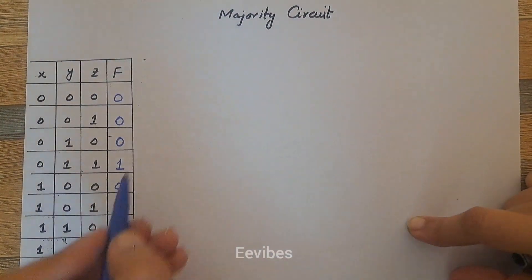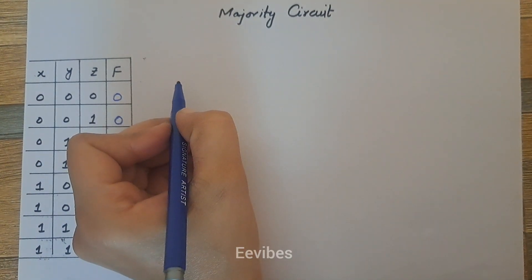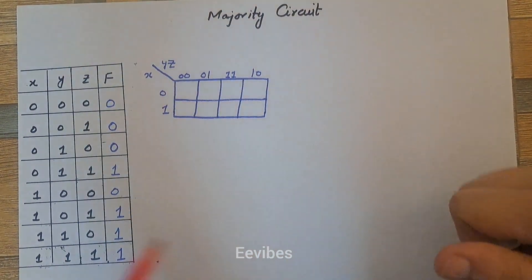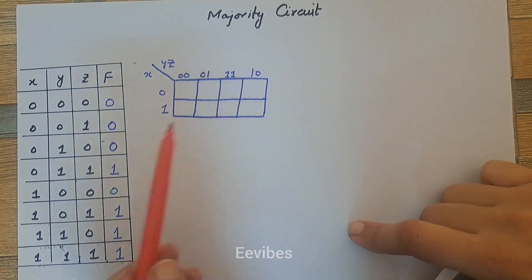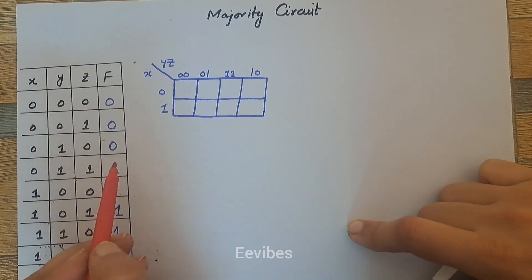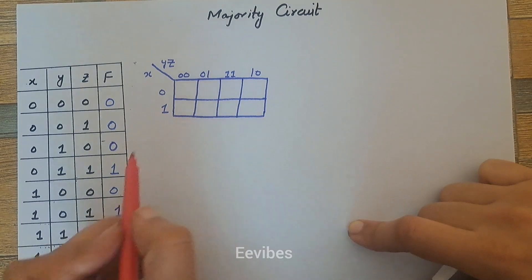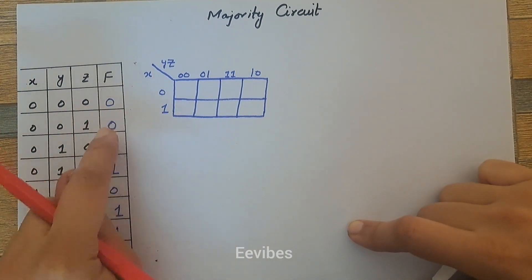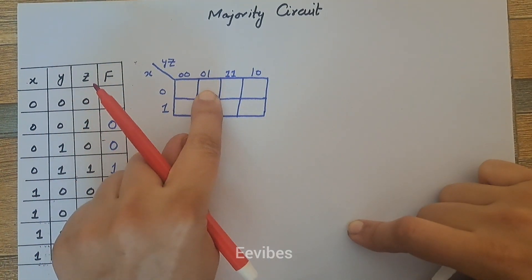The next step is to construct the K-map for this problem. So here you will design a three-variable K-map as I have drawn over here, and the next step is to place the minterms in this K-map.